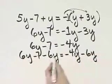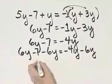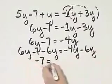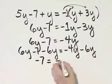What happens on the left side? The 6y's subtract out, and I have, be careful, it's negative 7 is equal to negative 4y minus 6y. That's negative 10y.